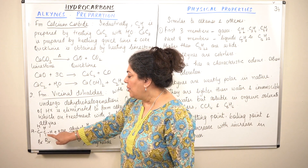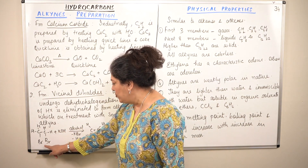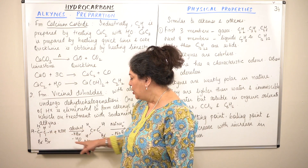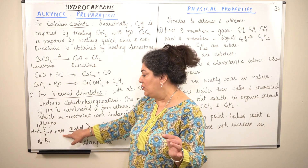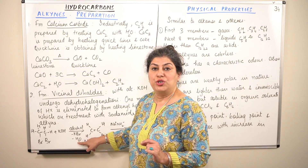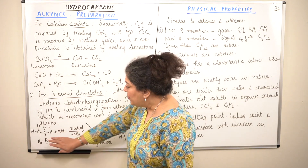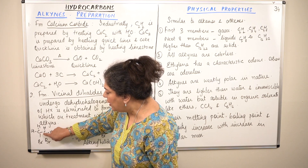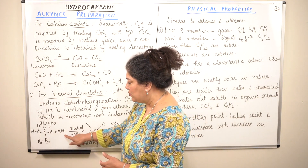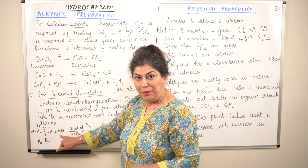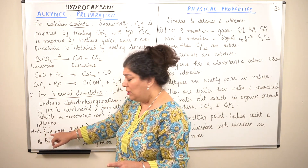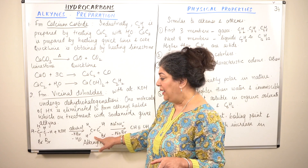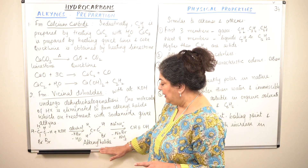The OH⁻ part combines with a hydrogen from the adjacent carbon to give H₂O, water. When one bromine and one hydrogen are removed, both carbons get back their electrons — hydrogen takes its electron and forms water, bromine takes its electron and forms KBr. These two electrons result in the formation of a double bond between the two carbons, giving you an alkenyl halide.